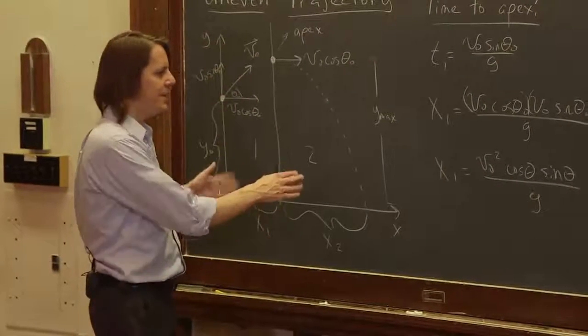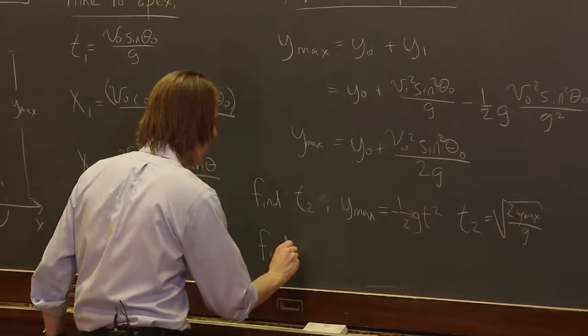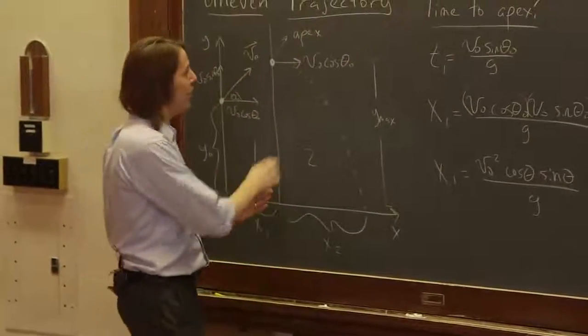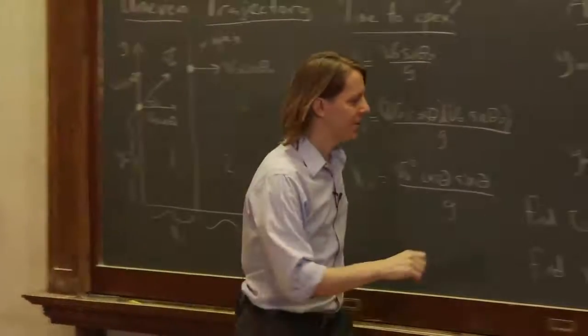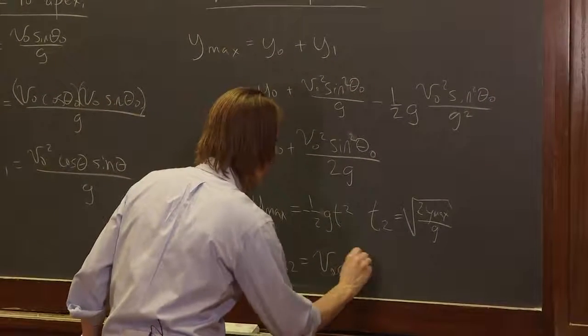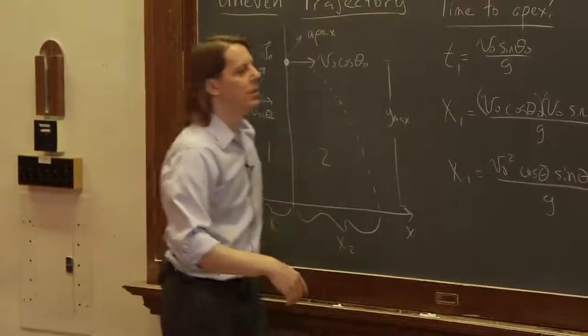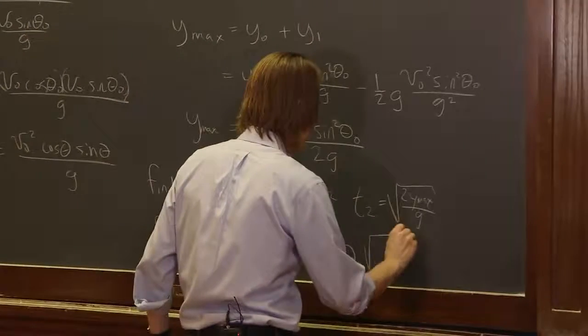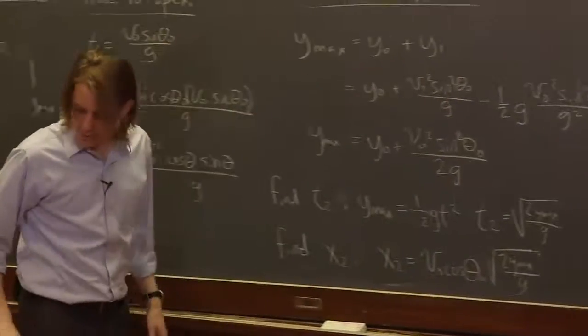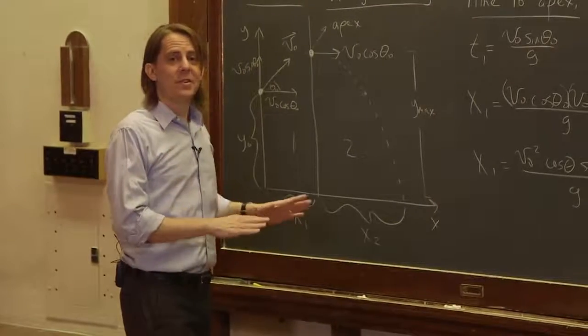And then you'd say, OK, I have t2. Now what is x2? So find t2 and find x2. x2 is just delta x is vt, right? So we know it's still going along at v naught cosine theta naught. And so x2 is v naught cosine theta naught, whatever number you had for that, times what you've now found to be t2, times the square root of 2y max over g.